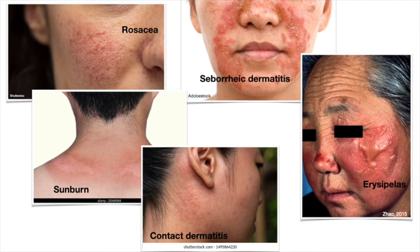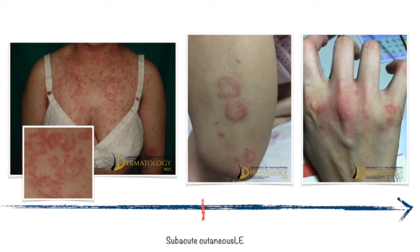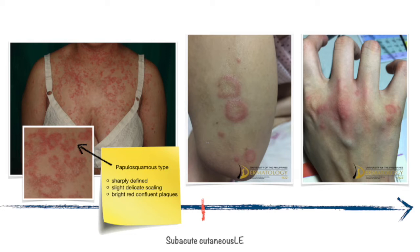Next on the spectrum is subacute cutaneous lupus erythematosus, or SCLE. There are two subtypes. First, we have the papulosquamous type, which presents as sharply defined erythematous lesions with slight delicate scaling evolving into bright red confluent plaques that are oval, arc-like, or forming multiple coalescing circles.